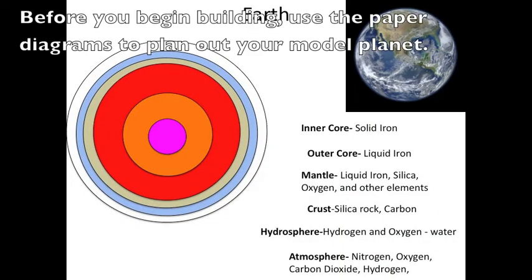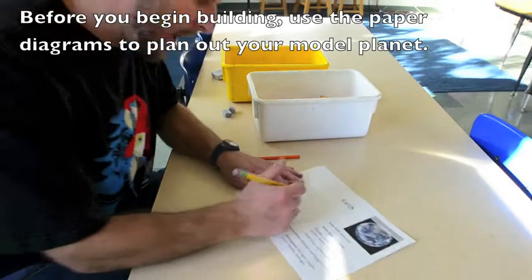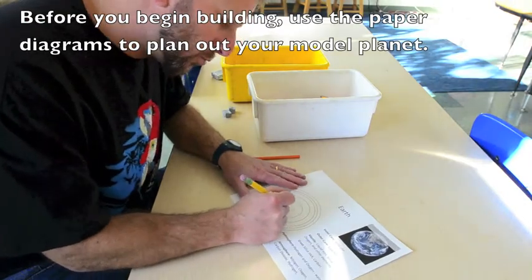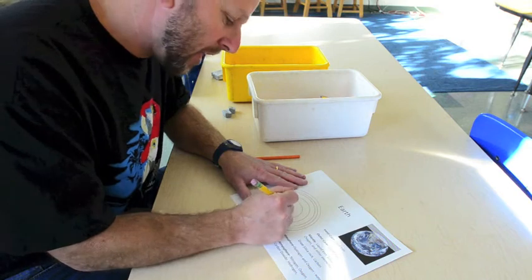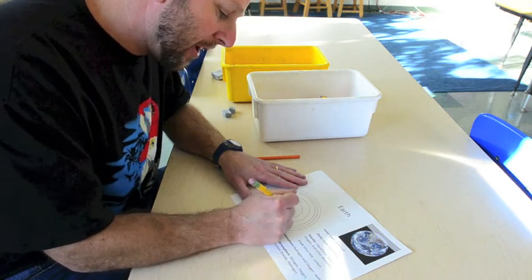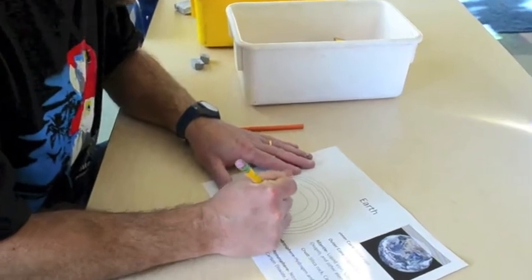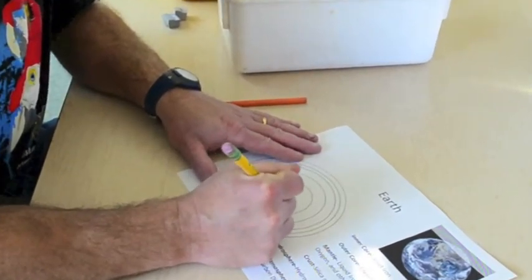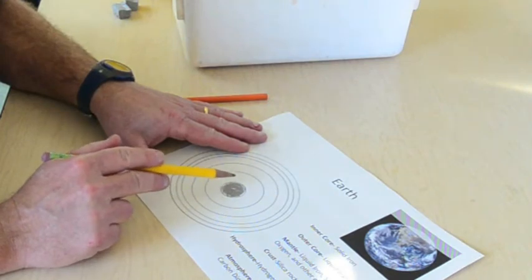Before you begin building, use the paper diagrams to plan out your model planet. I'm going to make my inner core gray because my inner core is made of solid iron. And when I think of solid iron, I think of steel and metal, which when it's solid, it's kind of grayish. So my inner core is gray for solid iron.